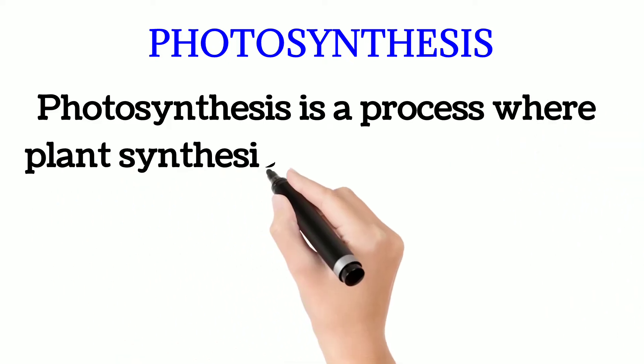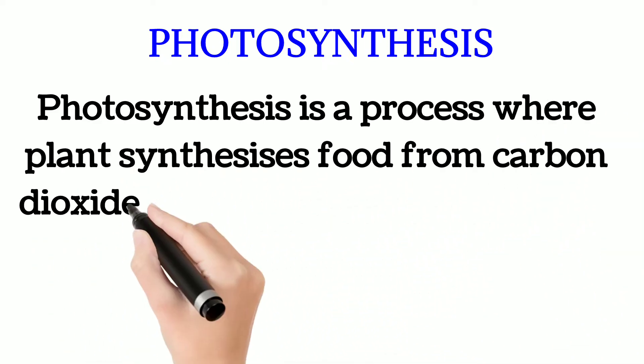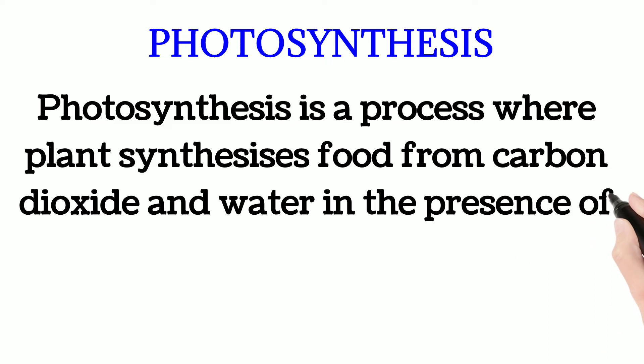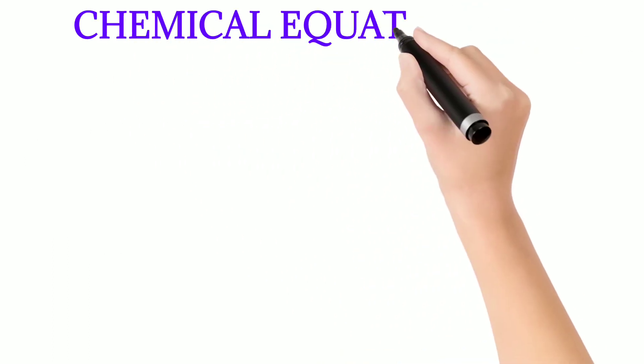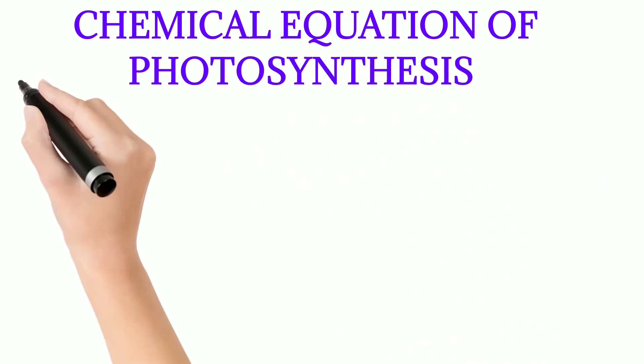a process where plants synthesize food from carbon dioxide and water in the presence of chlorophyll and light energy. We have covered the definition of photosynthesis, now we will talk about the chemical equation and word equation of photosynthesis.